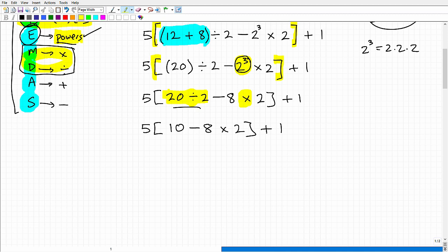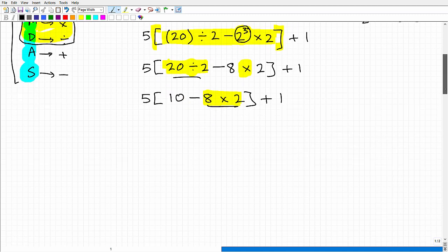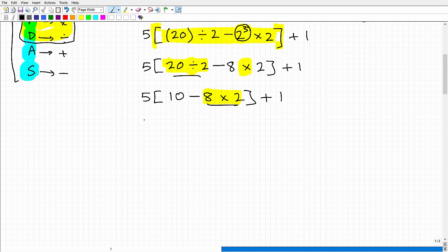All right, so I'm still here because I know I have to continue to work on everything that's inside of here. And I'm just looking around and say, okay, do I have any more multiplication or division? And, in fact, we do, right? Right here. So 8 times 2. I'm going to do that next, which, of course, is going to be 16. So let's go ahead and deal with that now. So this will be 5 bracket, 10 minus 8 times 2, of course, is 16 bracket plus 1.